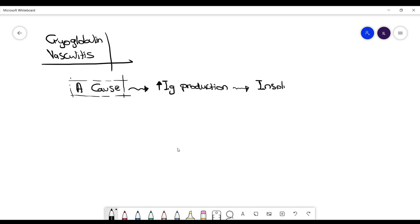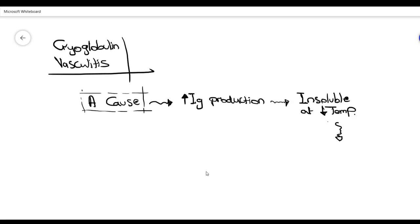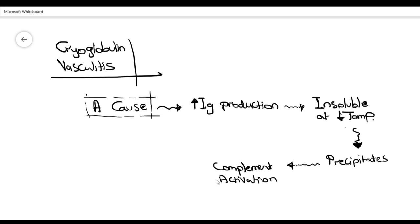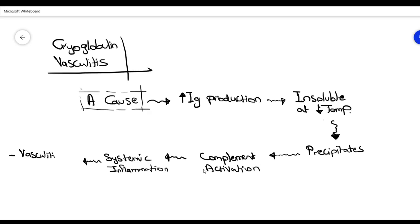This type of immunoglobulin is insoluble at low temperature, which we call cryoglobulin. It precipitates in tissues and causes complement activation. Complement activation causes systemic inflammation, vasculitis, and glomerulonephritis.